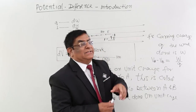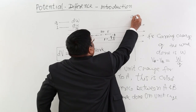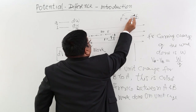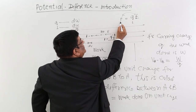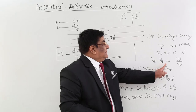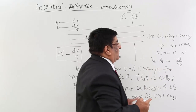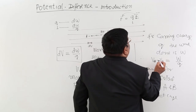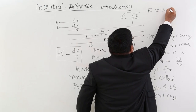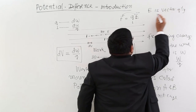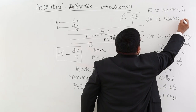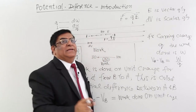Recall that electric field, when charge equals one, is force — and force is a vector quantity, so electric field is a vector quantity. Potential difference, on the other hand, is work on a unit charge, and work is a scalar quantity. Therefore, potential difference is a scalar quantity. So E is a vector quantity, while dV — potential difference — is a scalar quantity.